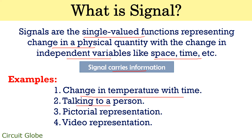The second example is talking to a person. When we speak, the change in acoustic vibration with time results in a speech signal, and this helps in conveying the message to the person. The third is a pictorial representation or a still picture — it is formed by varying the brightness from one point to another, thus representing a static picture that can be visualized by human eyes. The next one is video representation — a video also shows the change in graphics with respect to time, delivering some specific content. Hence, the change in physical quantity relative to some variables represents some kind of information, and this is known as a signal.